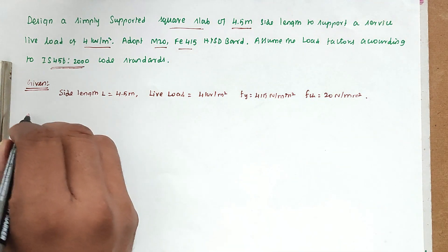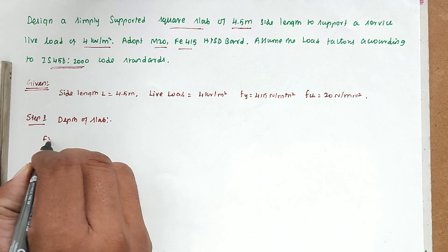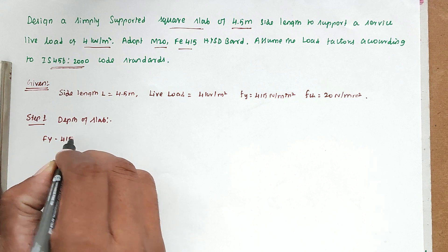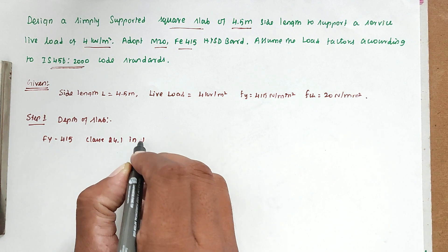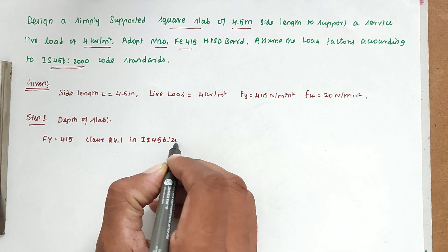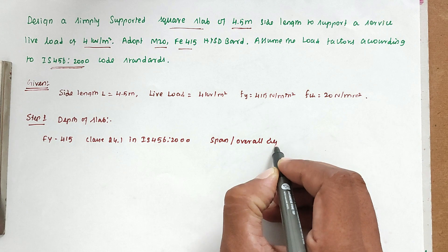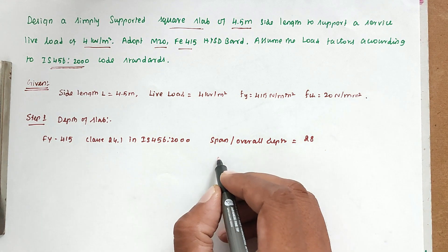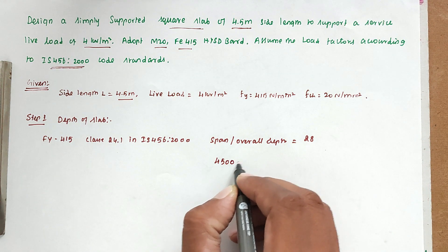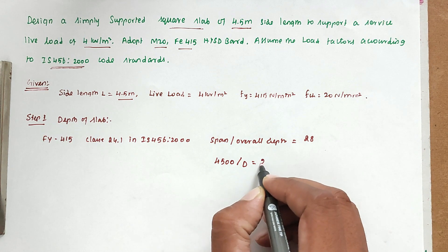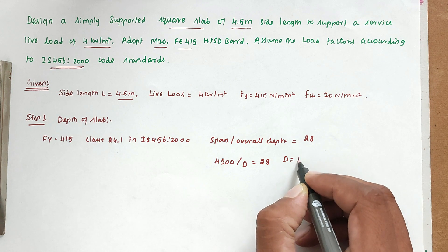Step 1: Find the depth of slab. Using fy = 415 (HY SD bars), according to Clause 24.1 of IS 456:2000, span/overall depth = 28. So span/D = 28. Span = 4500 mm, therefore D = 4500/28, giving an overall depth of 160 mm.